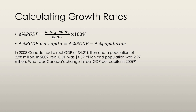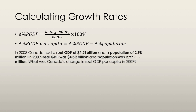Let's take a look at an example. In 2008, Canada had a real GDP of 4.21 billion and a population of 2.98 million. In 2009, the real GDP was 4.59 billion and the population was 2.97 million. We need to find Canada's change in real GDP per capita in 2009. The two real GDP values and the two population values are all we need to calculate the percent change in real GDP per capita.